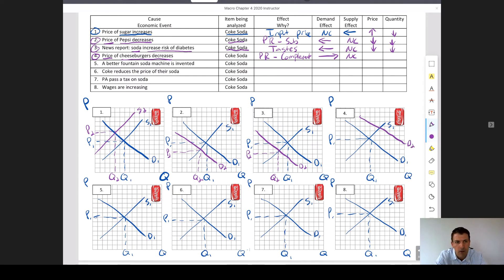Alright, number four, cheeseburger prices go down. I'm thinking like McDonald's. Well, cheeseburgers and Coke are complements. So if the price of cheeseburgers go down, people are going to buy more cheeseburgers, they'll buy more soda. So the demand curve would shift to the right and push up prices. That's a good thing.